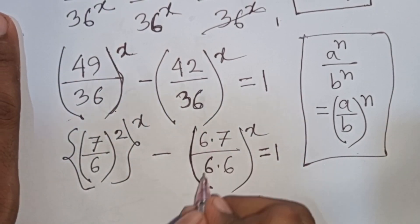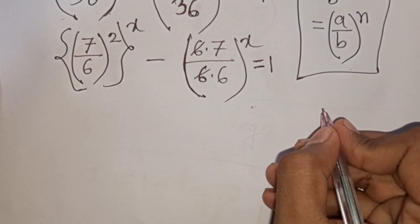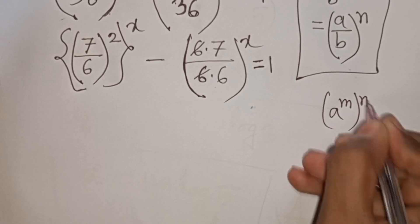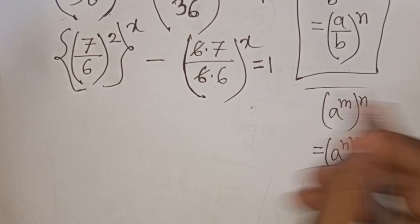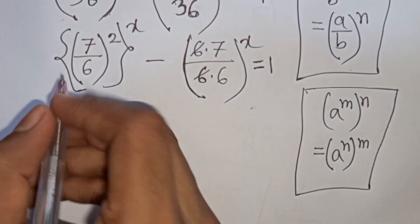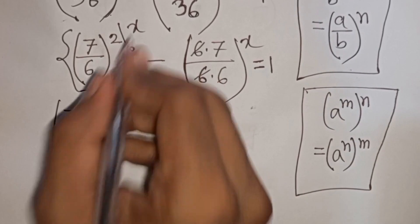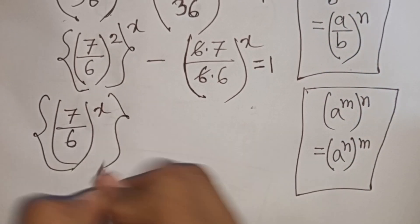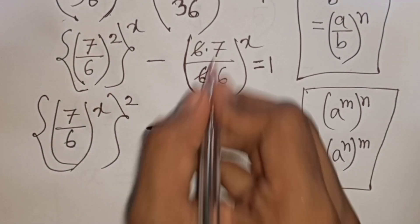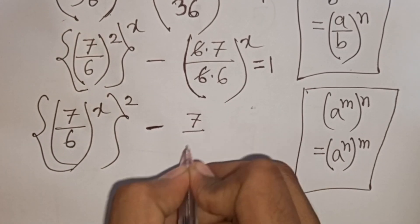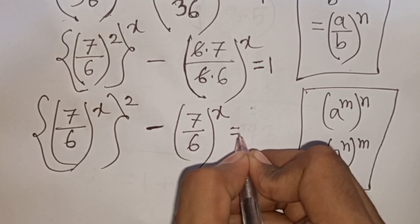Now the 6s cancel. We apply the rule that (a^m)^n = a^(m·n), so we can write (7/6)^x raised to the power of 2, minus (7/6)^x, equals 1.